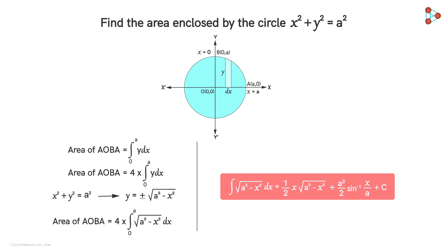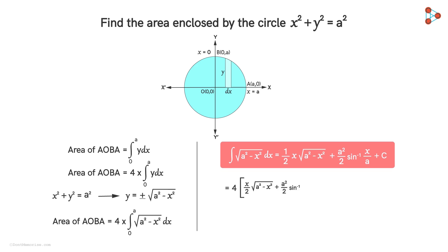Hence on applying this result and substituting the limits, we get the area enclosed by this circle as πa². So that's how you find the area under a simple curve. We hope that you've enjoyed this video!